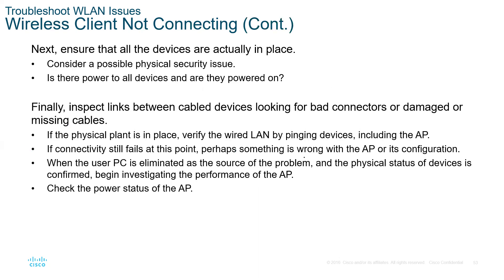Ensure that all devices are in place. Consider possible physical security issues — is there power to all devices? When you think troubleshooting, you think complex issues, but from experience they are often simple. An IT person gets called because someone is not connecting to the internet, and it turns out the PC is off or the access point is off. You switch it on and everyone gets access. Inspect links between cables and devices, looking for bad connectors, damaged, or missing cables.